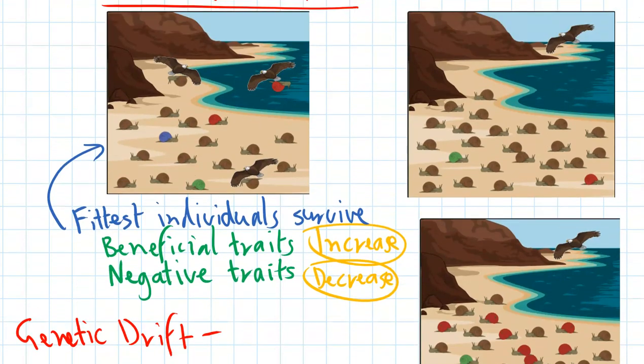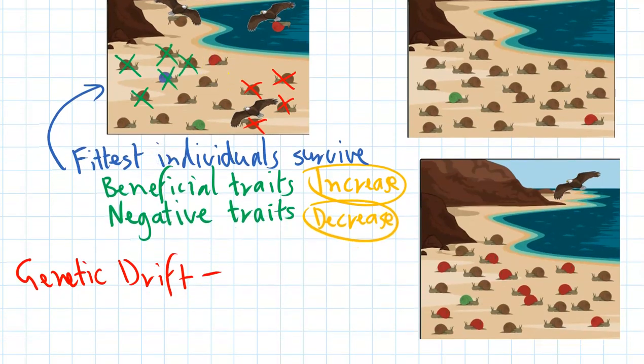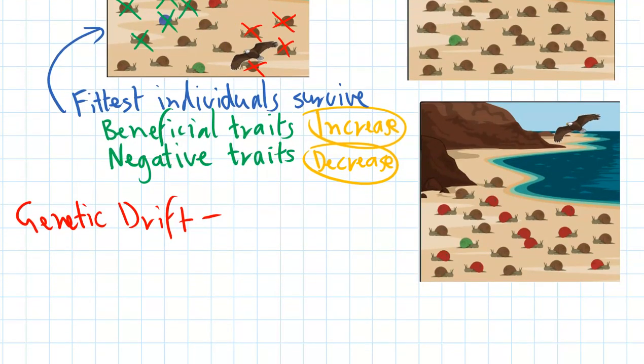If by chance a disease happened to kill off the snails living in this area here, and they happen to be brown snails, and then maybe a rock slide from the cliffs happens to land over here and crushes these snails, these are all random events. Then suddenly the red and the green snail down here are in a higher percentage in the population. Just by chance, even though the red snail isn't the fittest, it might happen to have a good breeding season.